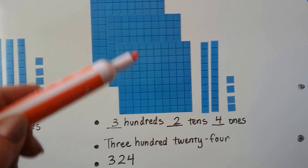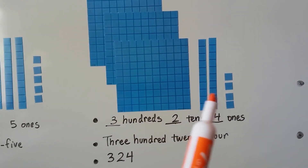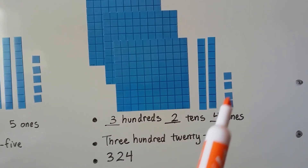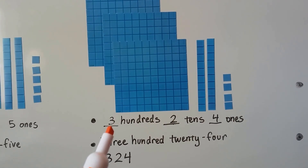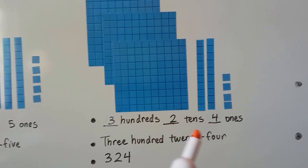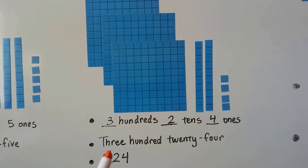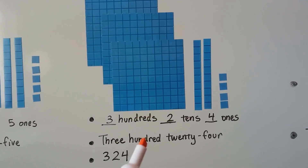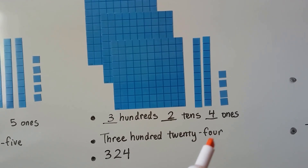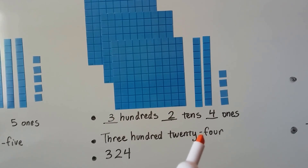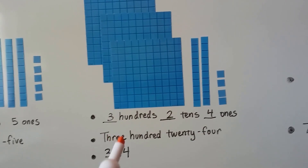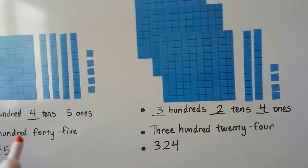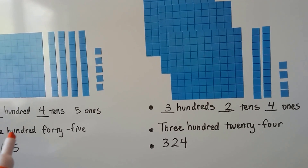Here we have three hundreds — 100, 200, 300 — we have two longs of ten and four ones. We can write this as three hundreds, two tens, and four ones. In word form: three hundred twenty-four. Notice the 24 has a hyphen in between it.